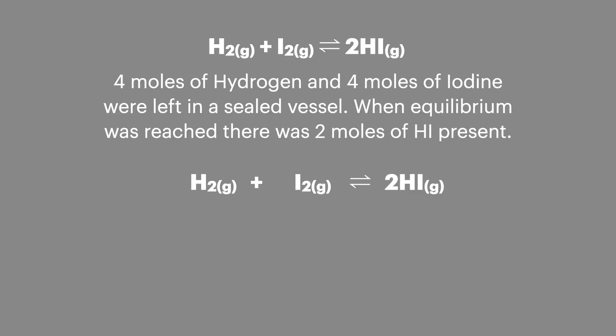This is a common type of problem we might face in an exam. Here we've been told the number of moles of the reactants before the reaction starts and the moles of the product at equilibrium. We're not given any more values and we need to have a method for working out the different numbers of moles present at equilibrium.